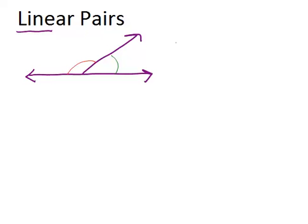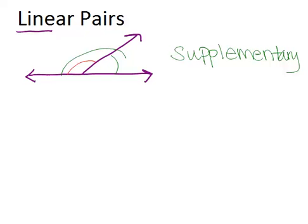Linear pairs are always supplementary. This means that they will always add up to 180 degrees because, if you remember, a straight angle, which would be the full angle all the way around, is 180 degrees. So these two angles in the linear pair have to add to 180 degrees.